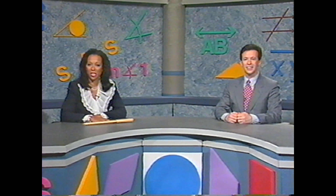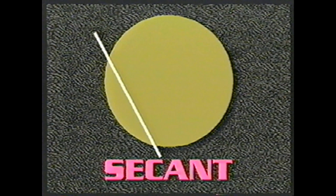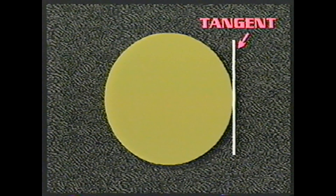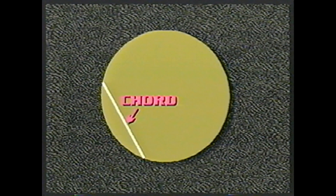Another important word to know is the diameter. A diameter is a line segment that connects two points on the circle and passes through the center. A diameter contains two radii. The letter D is usually used to designate the length of the diameter. The radius is five and the diameter is ten.